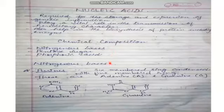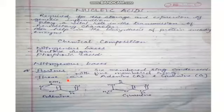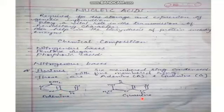Nitrogenous bases are of two types. The first type is purines, which consist of a six-membered ring fused with a five-membered ring. There are two types of purines: adenine and guanine, and their structures are as shown here.